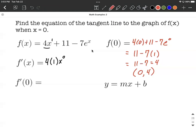The next term is +11. That's a constant, and the derivative of a constant is always zero. Finally, we have -7e^x. The derivative of e^x is always e^x.